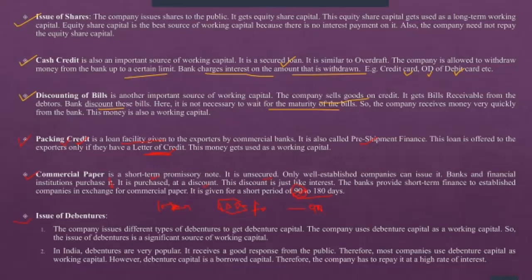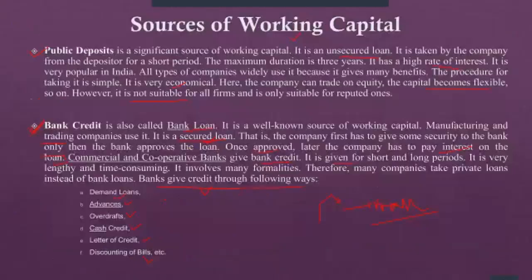Finally, issue of debentures is a significant source of working capital. Companies issue various types of debentures to raise debenture capital and use it as working capital. In India, debentures are very popular and considered one of the cheapest sources of funds, receiving good response from the public. However, debenture capital is borrowed capital, so the company must repay it at a higher rate of interest. These are the 12 major sources of working capital discussed in this video.